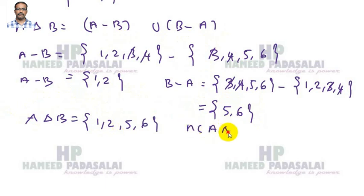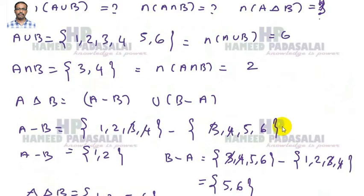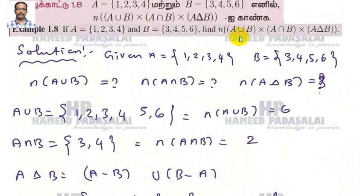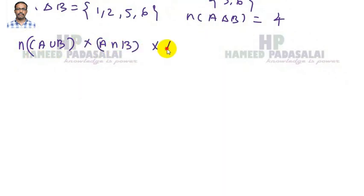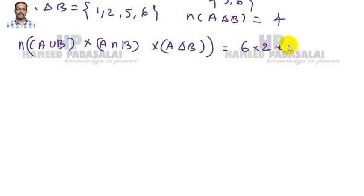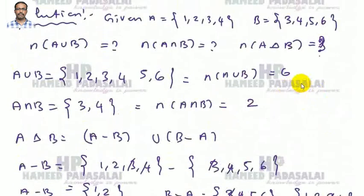So the number of A union B is 6, number of A intersection B is 2, and number of A symmetric difference B — combining A minus B and B minus A — gives us the final answer for Example 1.8. Thank you.